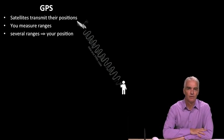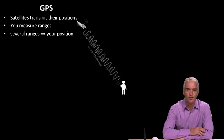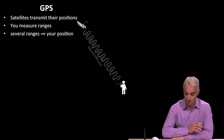So we're going to begin with a review of the basics of the GPS system itself. Remember it's very simple ideas. How does GPS work? Satellites transmit their positions. You measure ranges to the satellites, several ranges from several known positions give you your position, and that's all there is to it.